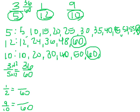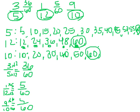Then I need to change my one-twelfth into sixtieths. I counted by twelve five times to get sixty, so since I did the bottom times five, I also do the top times five. One times five is five, so one-twelfth is equal to five sixtieths. The last one: I need to change nine-tenths into sixtieths. I counted by tens six times to get to sixty, so I also do the top times six. Nine times six is fifty-four, so nine-tenths is equal to fifty-four sixtieths.